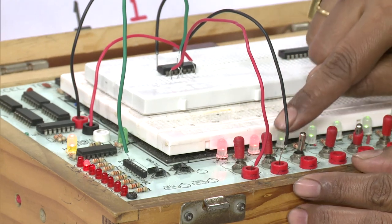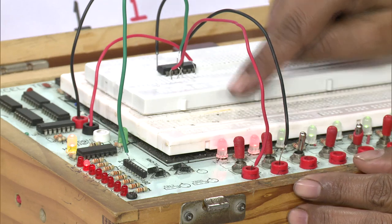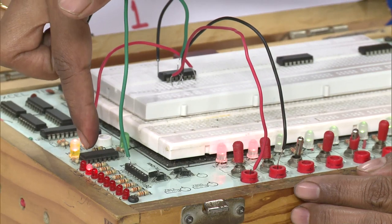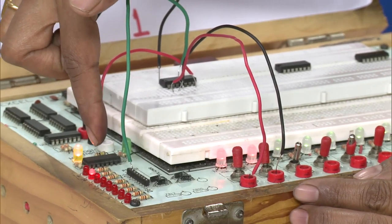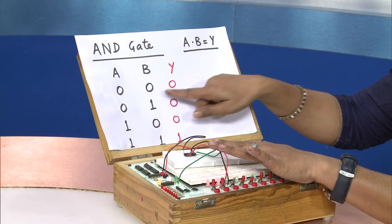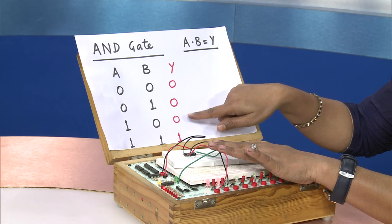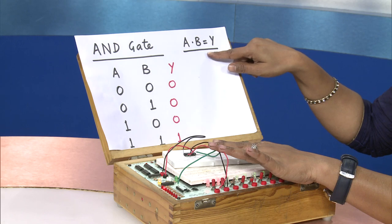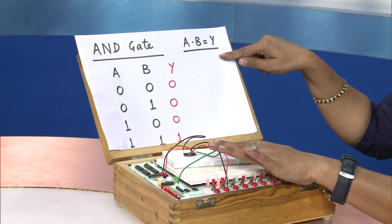When both A and B are set to 1, the output LED glows — Y becomes 1. This confirms that for the AND gate, whenever any one input is 0, the output is 0. Only when A = 1 and B = 1 is the output 1. The Boolean expression A·B = Y is verified. Today we discussed the AND gate, verified its circuit, and experimentally verified its truth table. Thank you learners.